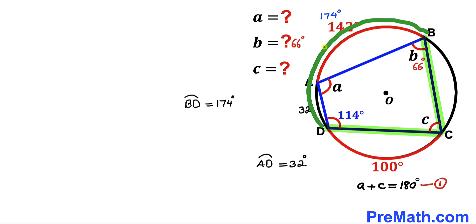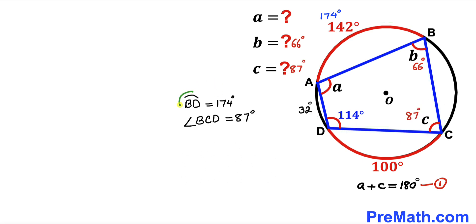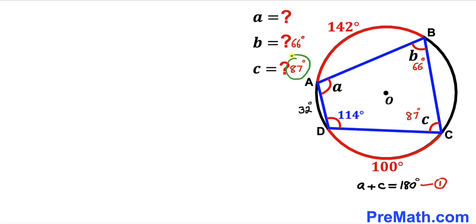Now arc AB subtends angle C at the circumference. The angle at the circumference equals half the arc measurement. So since arc BD is 174 degrees, angle at the circumference BCD equals half of 174, which is 87 degrees. Thus angle C turns out to be 87 degrees.